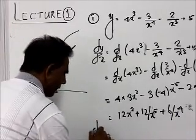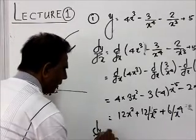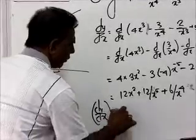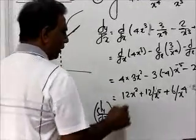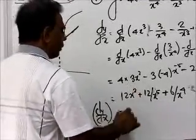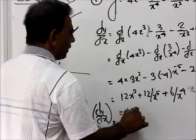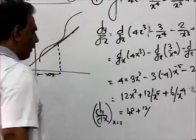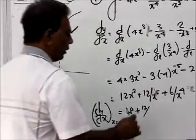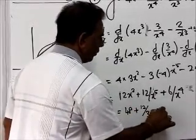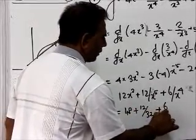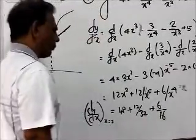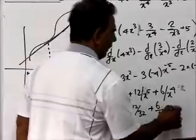So dy/dx evaluated at x = 2: substitute x = 2. We get 12 × (2²) = 12 × 4 = 48, plus 12 over 2⁵ = 12/32, plus 6 over 2⁴ = 6/16. We can find this value.